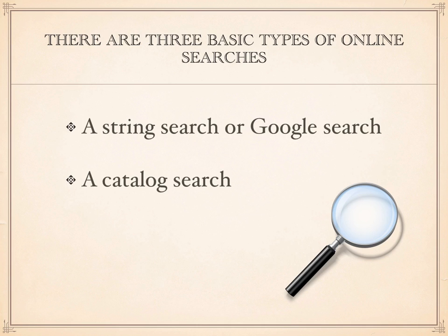The next type of search is what I call a catalog search. Online catalogs are not usually searched by the Google search engine, and finding a record in a catalog requires a different set of search skills than basic string searches. The last of the three basic types is the wiki search. Wikis are fairly common online, and their content is searched differently than either a Google search or a catalog search.